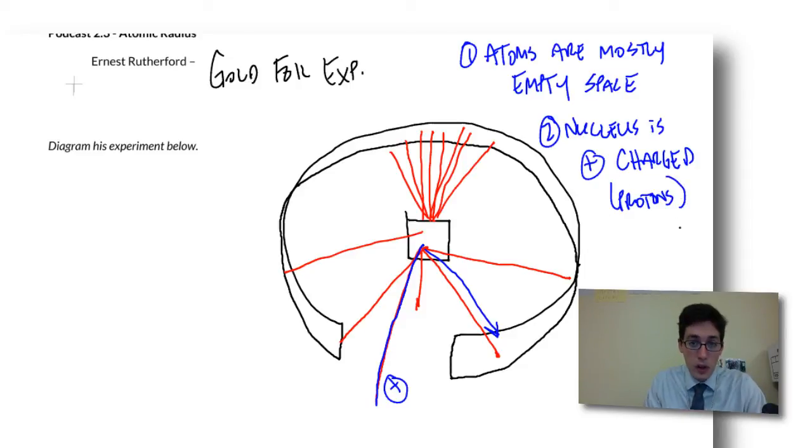Remember, atoms are made of protons, neutrons, and electrons. The positive portion of it are the protons. So again, this is the gold foil experiment.